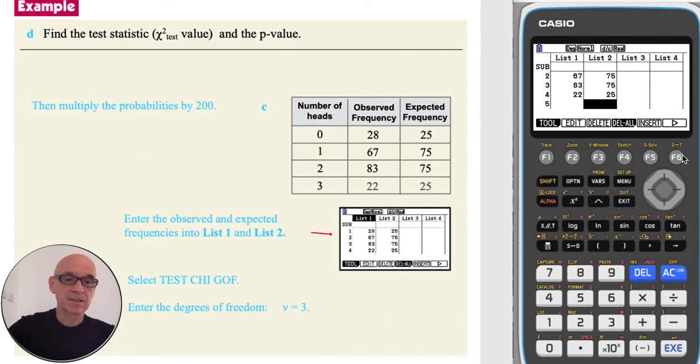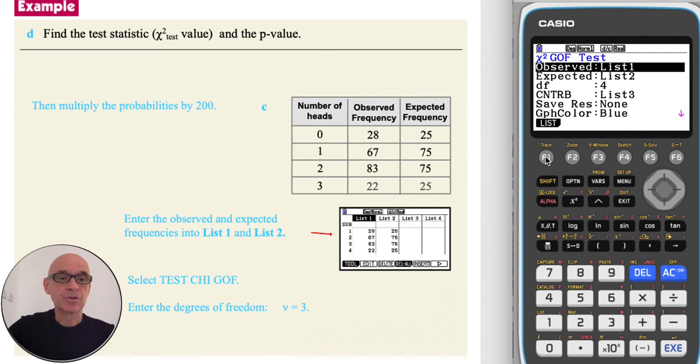Then pressing F6 twice to get back to the main statistics menu. Pressing F3 for a test, F3 again for a chi-squared test, and F1 for a goodness of fit test.